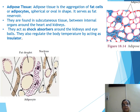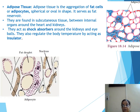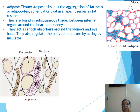The fatty substances are stored in adipose tissue, which serves as a fat reservoir. Adipose tissue is found in subcutaneous tissue beneath the skin — in the epidermis continuing as hypodermis and dermis — between internal organs, and around the heart. It acts as a shock absorber around the kidneys and eyeballs, and also regulates body temperature by acting as an insulator.